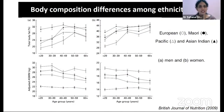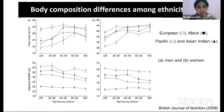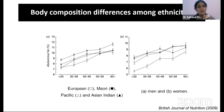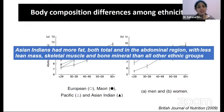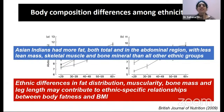Several studies have looked at body composition among different ethnicities. In one such study, the first figure shows total body fat percentages — A for men, B for women — and Asian Indians had the highest total body fat percent in both men and women, while lean mass was lowest. The same study showed body fat percent was significantly higher in Asian Indians, and visceral fat increased with age across all ethnicities. These studies confirm definite ethnicity-based differences in body composition: Asian Indians have more total and abdominal fat with less lean mass, skeletal mass, and bone mineral than all other ethnic groups. These ethnic differences in fat distribution, muscularity, and body frame may contribute to an ethnic-specific relationship between body fatness and BMI.